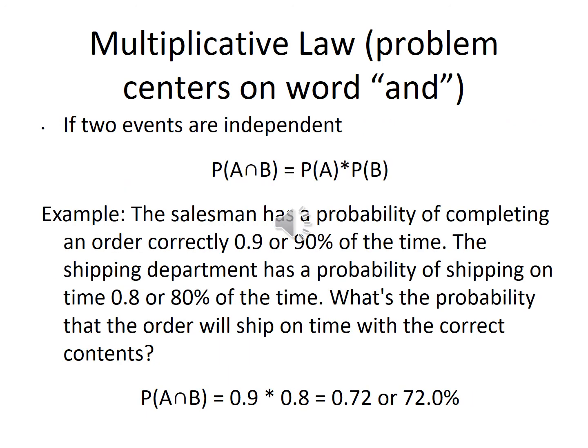If the two events are independent, P(A∩B) reduces to simply P(A) × P(B). For example, a salesman completes an order correctly 90% of the time (P = 0.9), and shipping delivers on time 80% of the time (P = 0.8). What happens in shipping doesn't depend on the salesman. So the probability the order ships on time and correctly is 0.9 × 0.8 = 0.72, or 72% of the time.